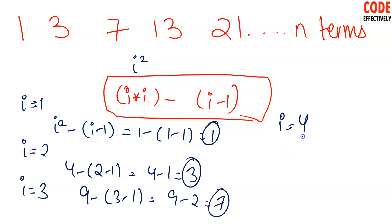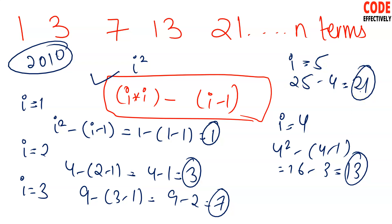Let's go for the 4th term also. 4 square minus 4 minus 1, that is what? 16 minus 3, it is what? 13. Good. Is it perfectly working or not?